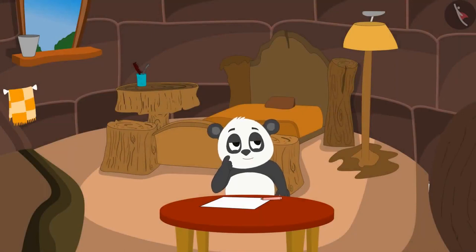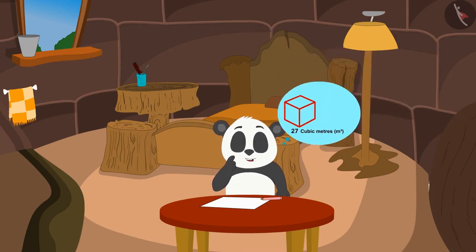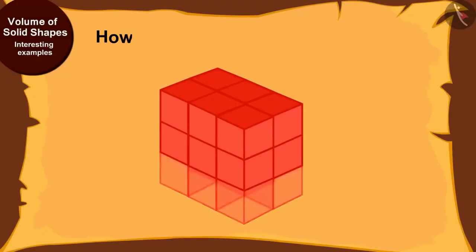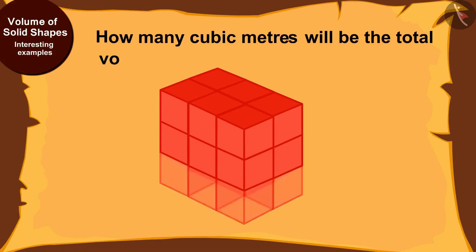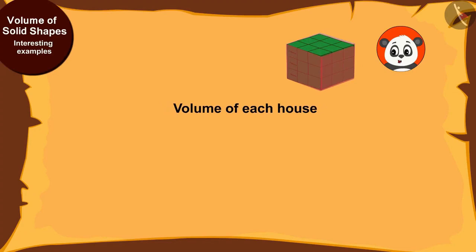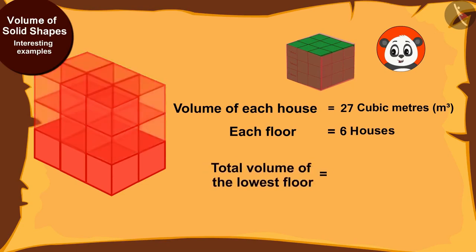The volume of each house is 27 cubic meters. If I build 6 houses on each floor, the total volume of the lowest floor will be 6 times 27, that is 162 cubic meters.